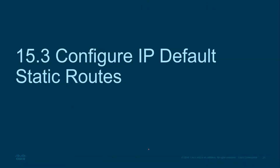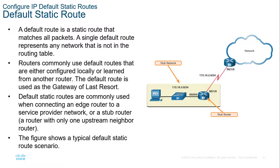The next section is about configuring the default static route. This is what you're going to probably see the most on current networks that have dynamic routing protocols. First of all, what is a default static route? We can have something called a stub router or stub network — that's going to be more of a branch. We can say match all packets and set a default route. Routers commonly use the default route either configured locally or learned from other networks. The default route is basically the router of last resort — if it doesn't have a matching address in the route table, we can say send to our gateway of last resort.